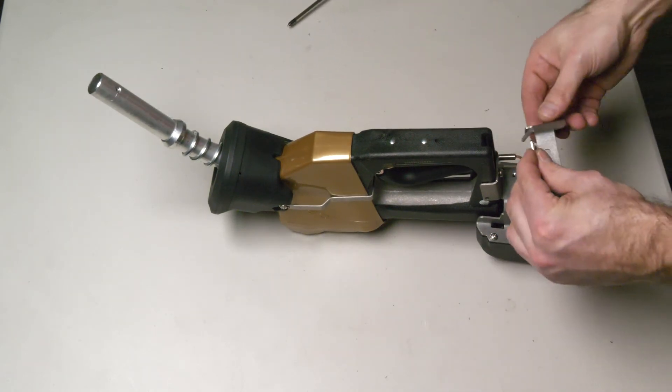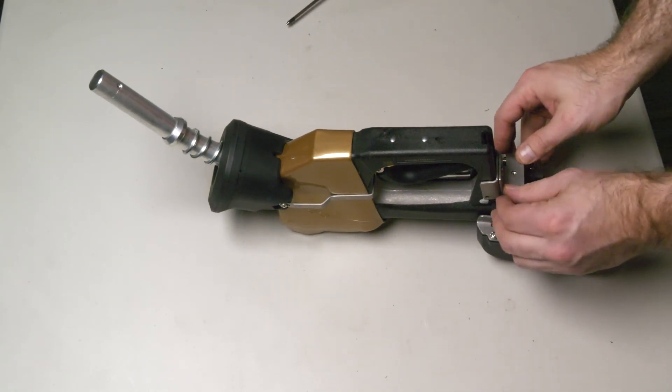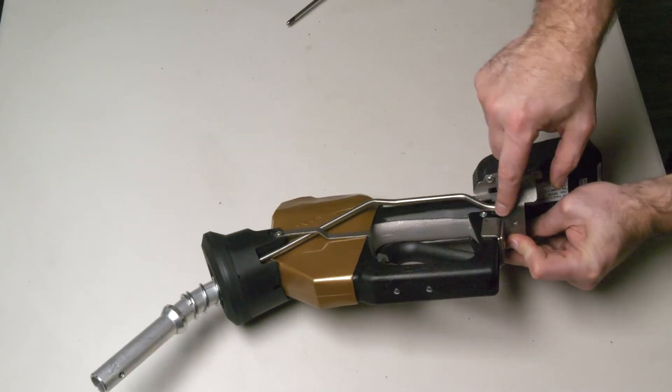Last you'll attach the antenna cable cover bracket by screwing it into the larger bracket like this. And that's it.